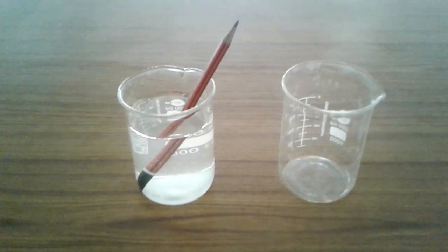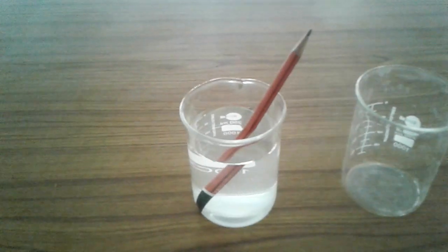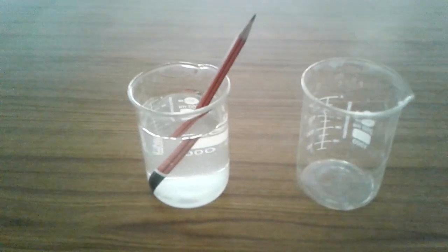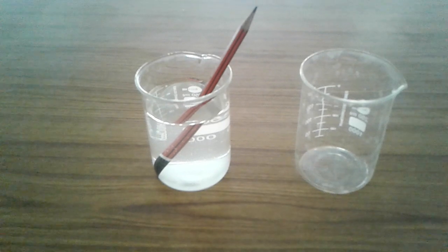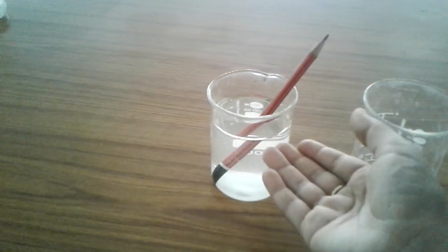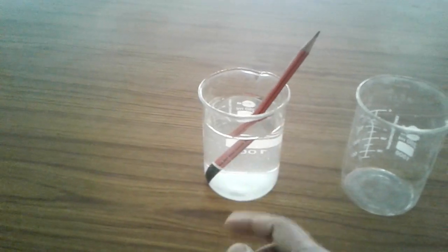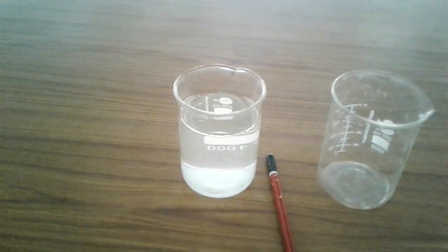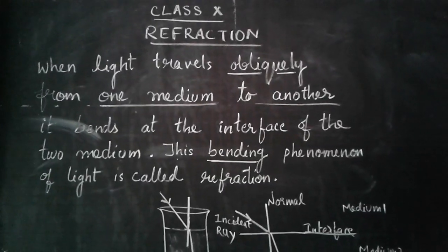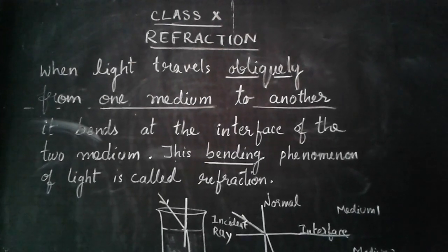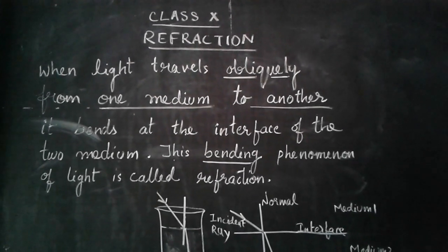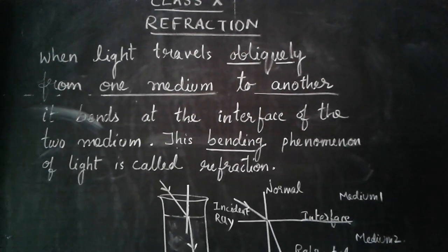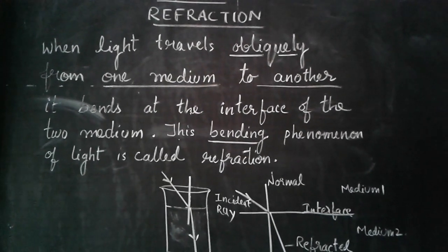What do these observations indicate? Students, these observations indicate that light does not travel in the same direction in all media. Till now we have studied about only one medium, but now we are discussing two mediums. The first medium is the air just above the water surface and the other medium is the water itself. This phenomenon is known as refraction. When light travels obliquely from one medium to another, it bends at the interface of the two mediums — this bending phenomenon of light is called refraction.